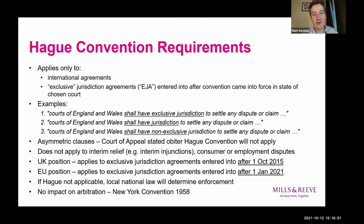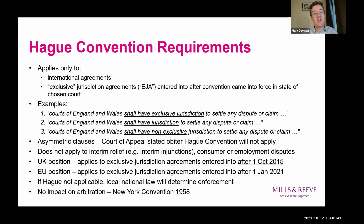The Hague Convention only applies to international agreements — an agreement will be international unless the parties are from the same state and all other elements relevant to the dispute are connected only with that state. So if you have two English parties entering into a contract to be performed in England with no other foreign element, apart from having chosen the Singapore or French courts, any judgment in that case would not be covered by the Hague Convention. This equally applies within the UK: an English party contracting with a Scottish party for services performed in Wales, choosing Northern Ireland as exclusive jurisdiction, would also not be international for Hague Convention purposes.